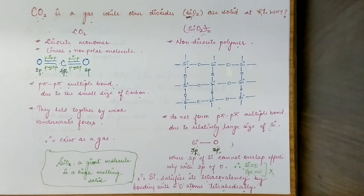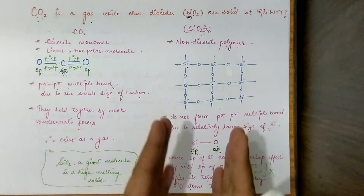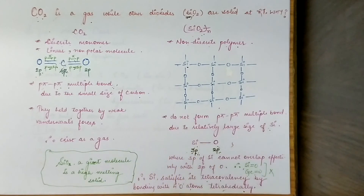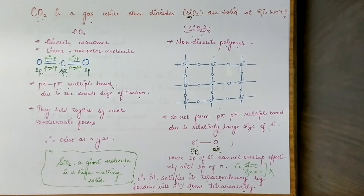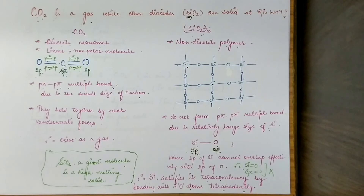One more point: if you talk about the melting point of silicon dioxide, because it is a very giant molecule with very high molecular size, it has a very high melting point. So we can also describe silicon dioxide as a very high melting solid.